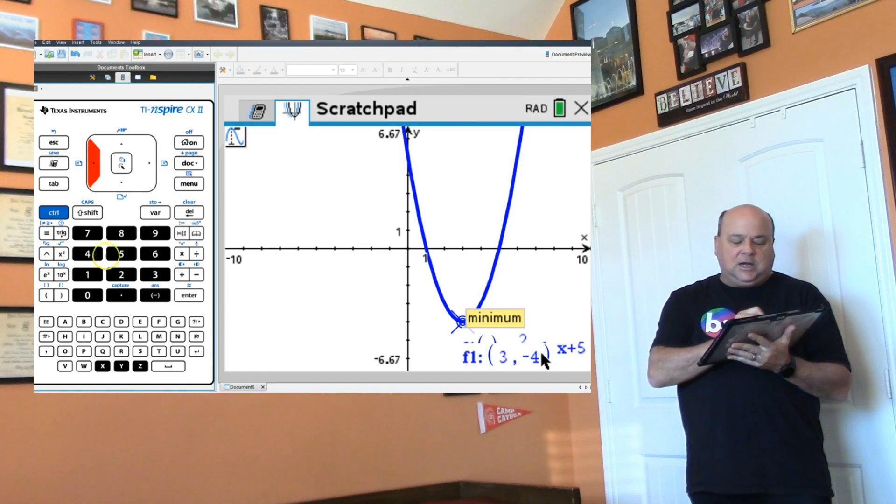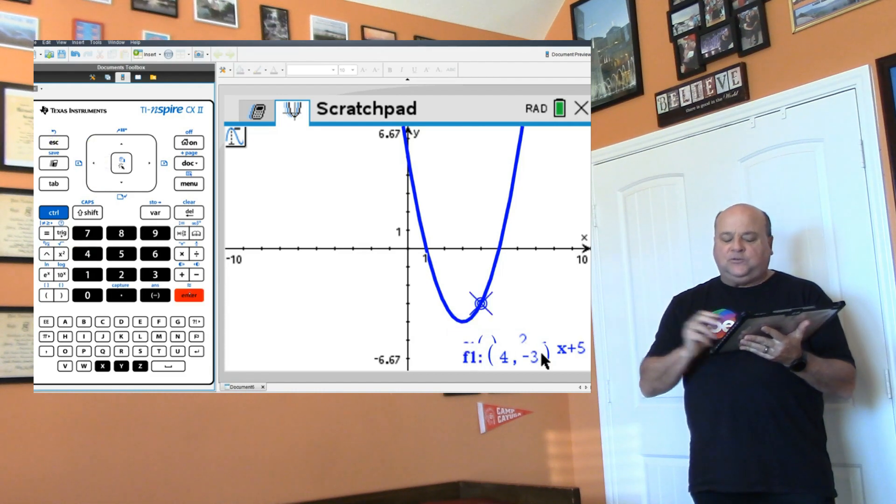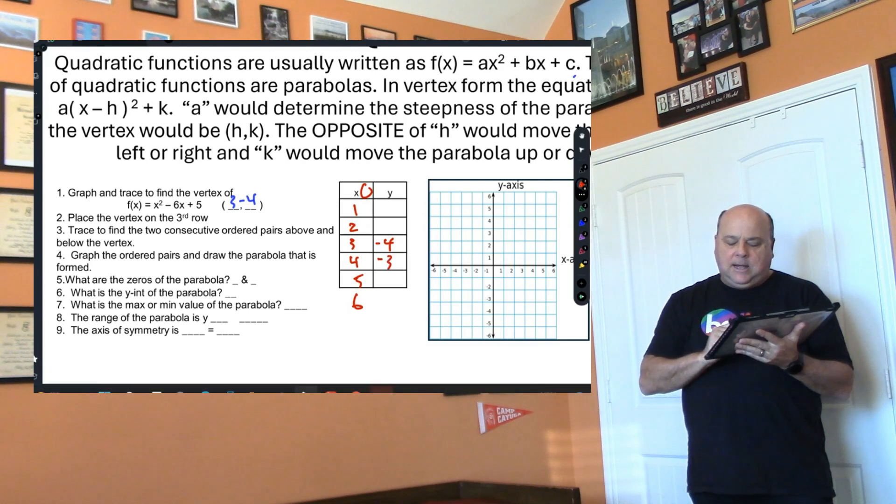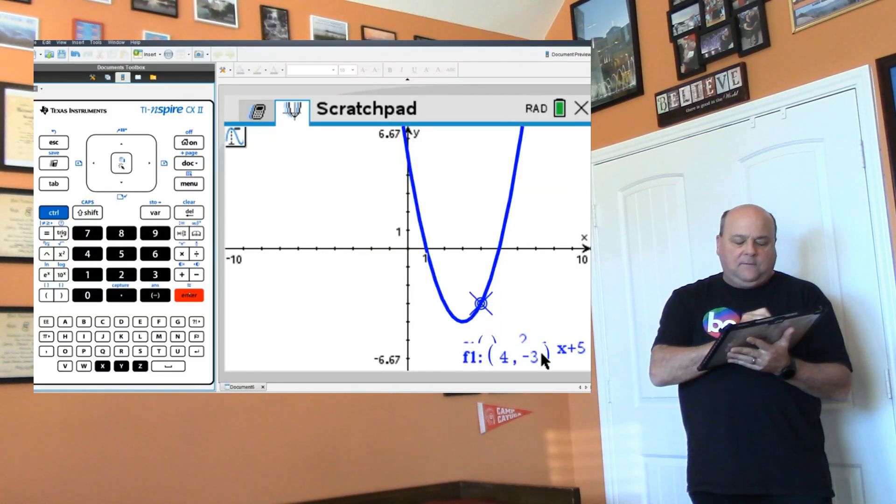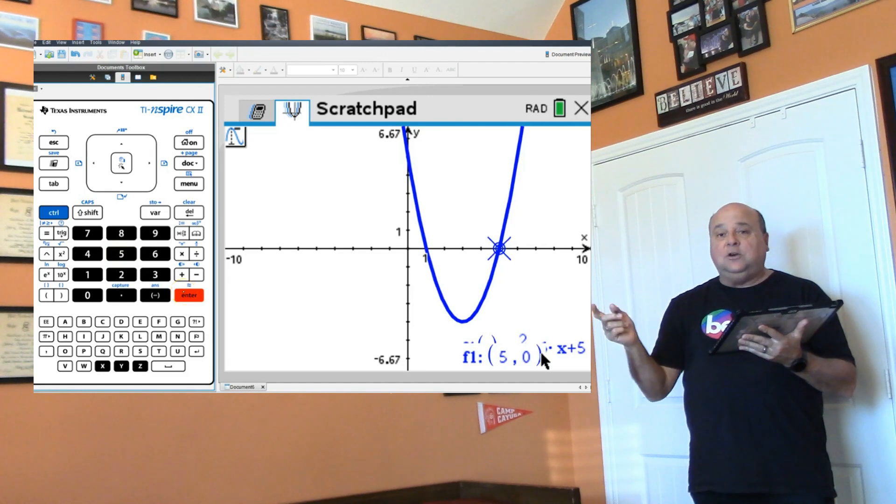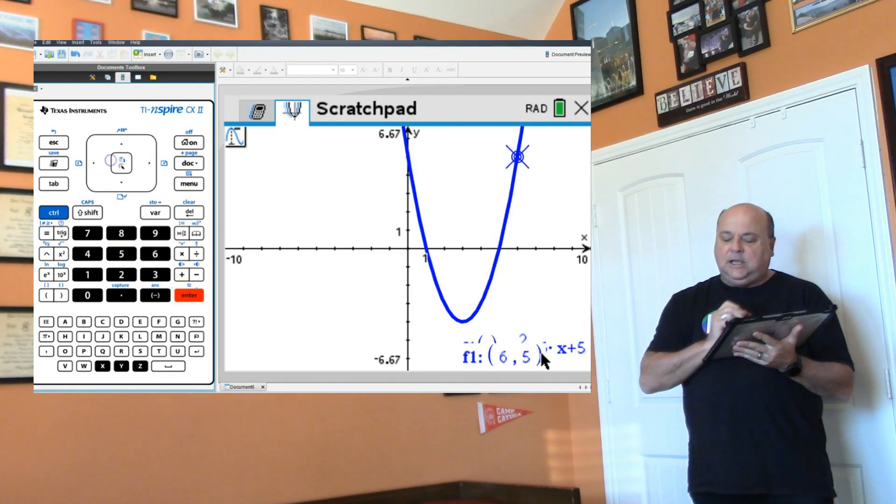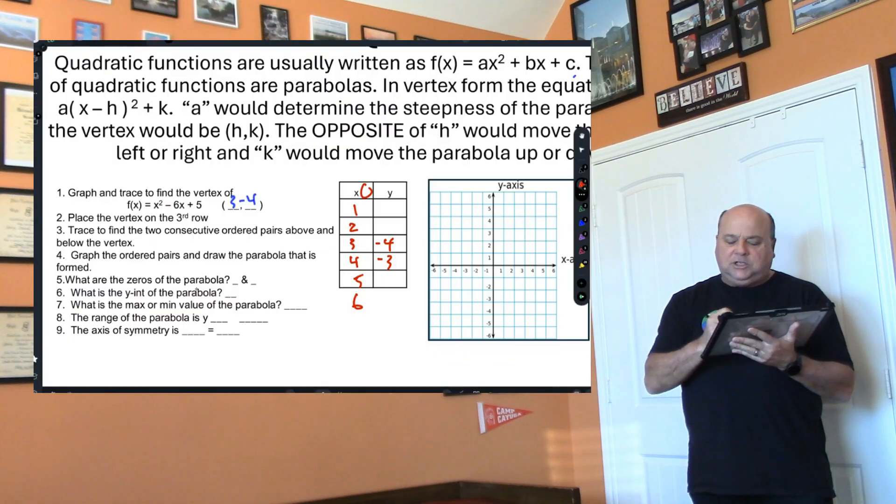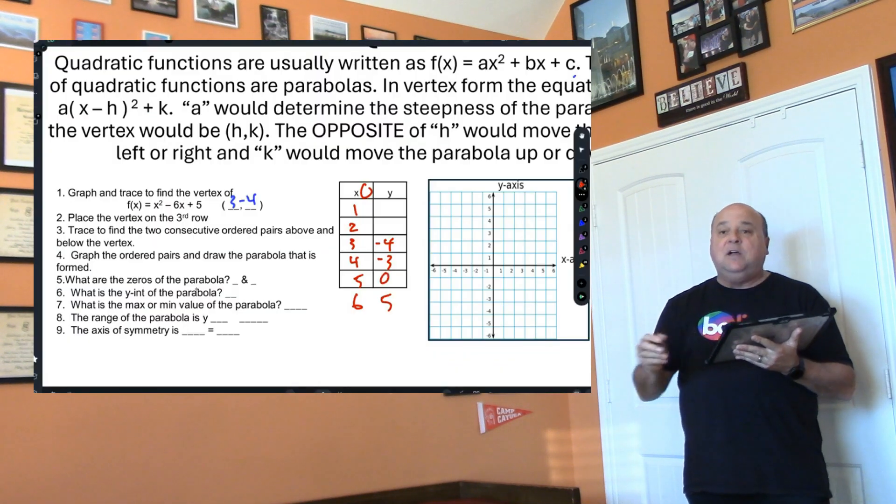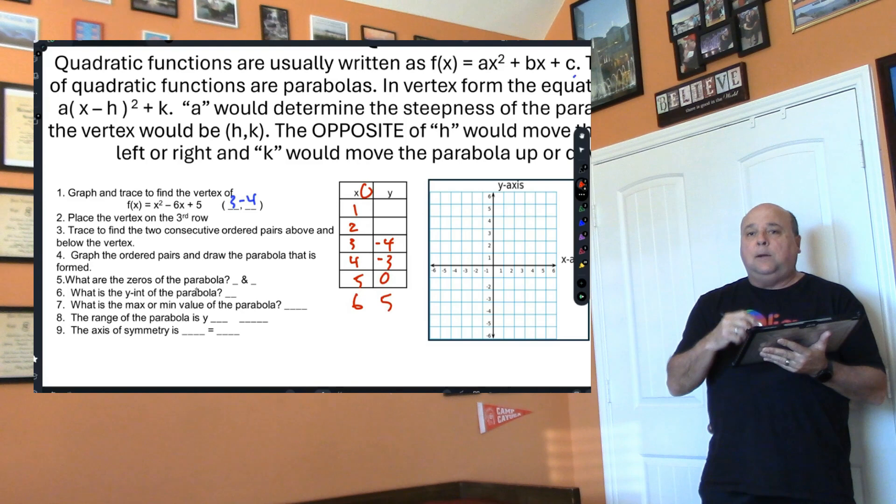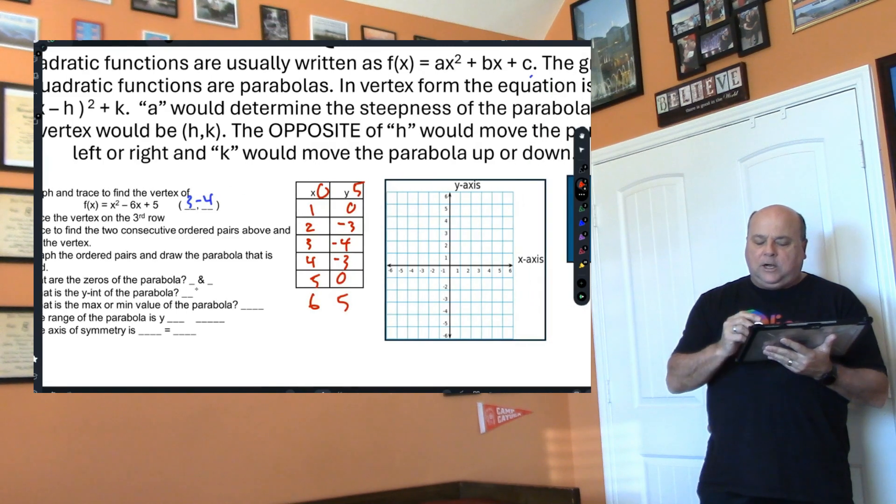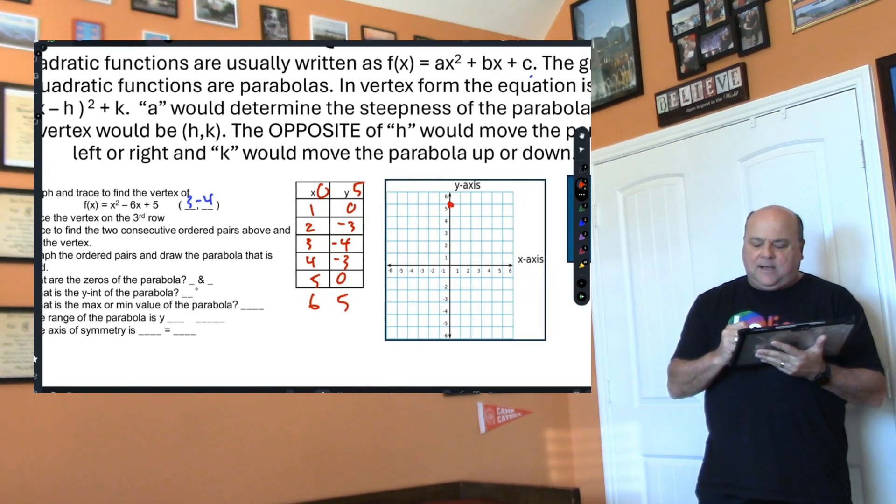I'm going to enter 4 and notice 4 is -3, so I'll put -3 here. Then I'll enter 5, 5, 5 which gives 0, and 6 which gives 5. Something I taught you is these numbers are going to flip, so this will be -3, that will be 0, this will be 5.